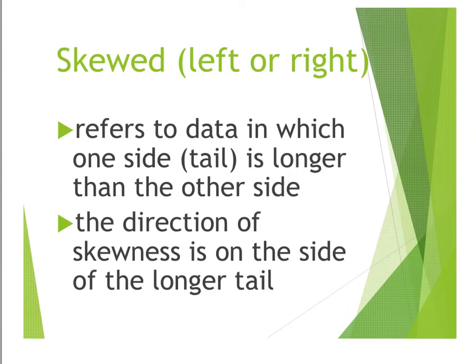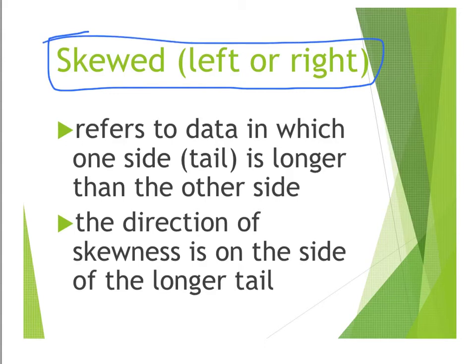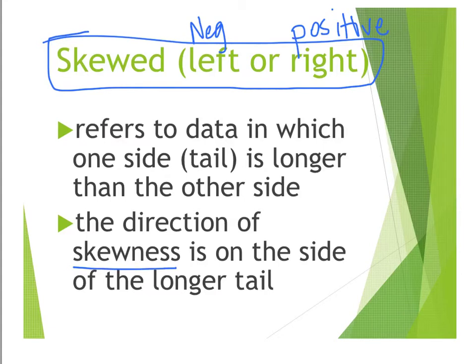The third type is when you have data that is skewed. It can be skewed in a left direction or a right direction. Left is sometimes referred to as negative skewness, and right skewness is sometimes referred to as positive skewness, so you need to know both ways to describe it. That's when you have data in which one side — called the tail — is longer than the other side. The direction of skewness is on the side of the longer tail.